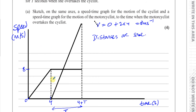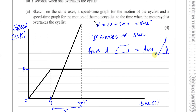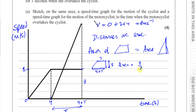The area under the cyclist's graph is a trapezium. Its height (the speed) is 8, one parallel side is T (the constant-speed portion) and the other is T plus 4 (the full duration). Using the trapezium area formula — half times the sum of parallel sides times the height — we get: (8 / 2) × (T + T + 4) = 4 × (2T + 4) = 8T + 16.